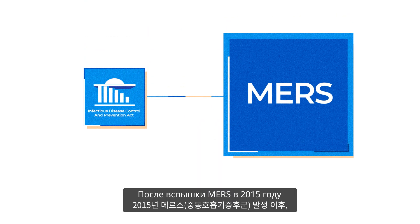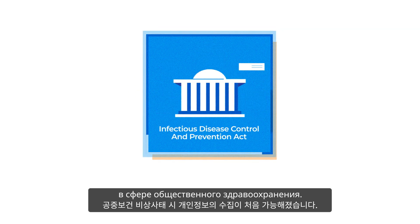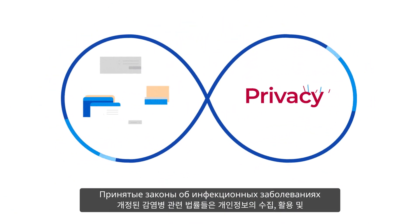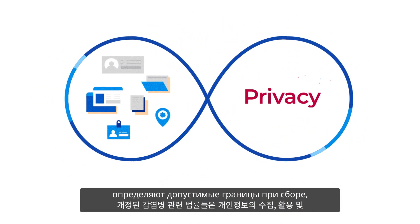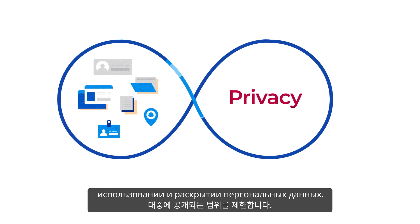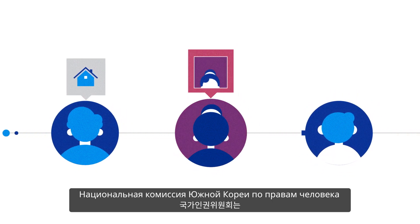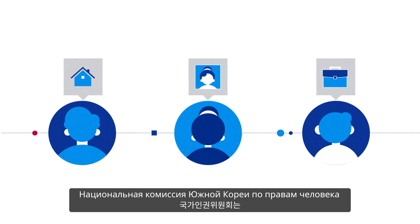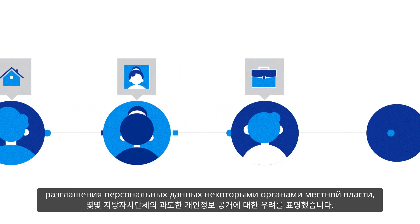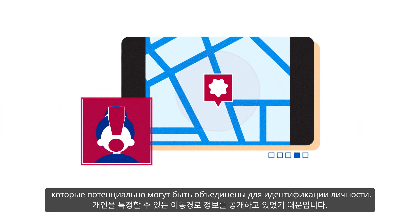After the 2015 MERS outbreak, the collection of personal data was initially authorized in case of a public health emergency. The amended infectious disease control laws limit the scope of collection, usage, and dissemination of personal data to the public. However, amid the outbreak of COVID-19, the National Human Rights Commission of Korea expressed its concerns about excessive disclosure of personal data by some local governments, several pieces of which information could potentially be pieced together to identify a person.